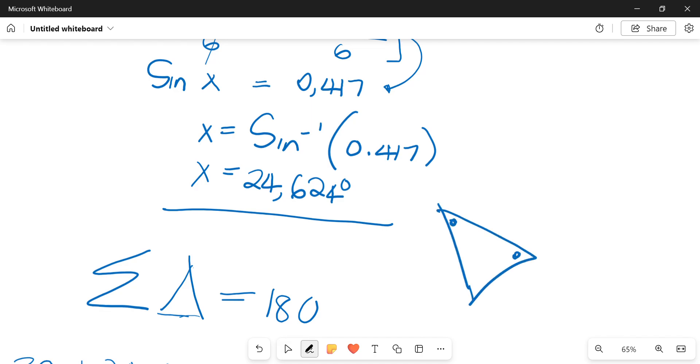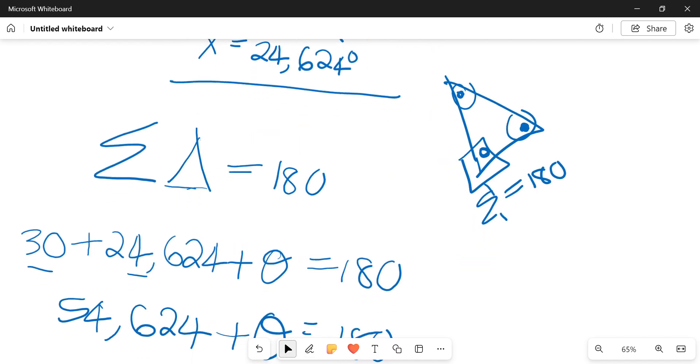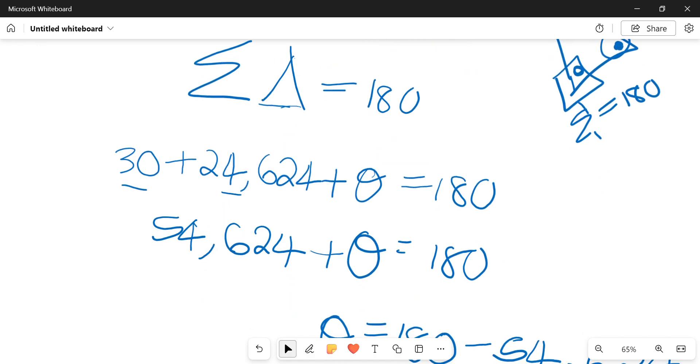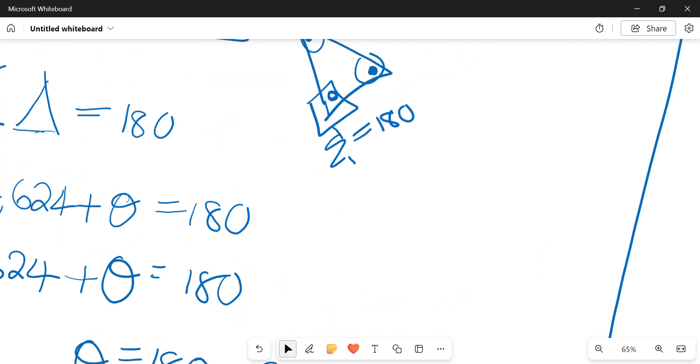Then since we had a triangle set up, we had the value of C, we just calculate the value of A. If you needed to calculate the value of B, that would be very easy because you know that the sum of the angles of a triangle need to equal to 180. So you could just say 180 minus this and that, and it essentially gives you what you are looking for. All right, so we had that 30, then we had that 24.624 plus theta equals to 180. Then that gives you 54.624 plus theta equals to 180. Then 180 minus 54.624, it essentially gives you 125.376.